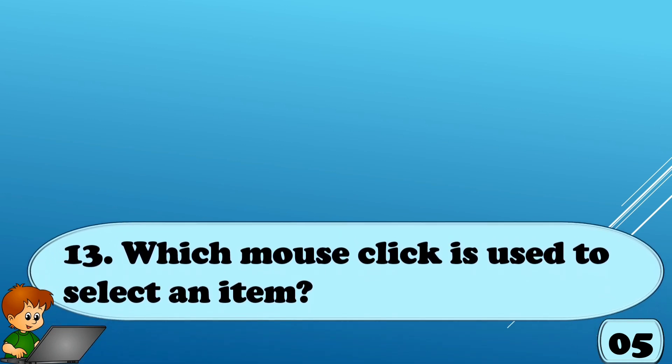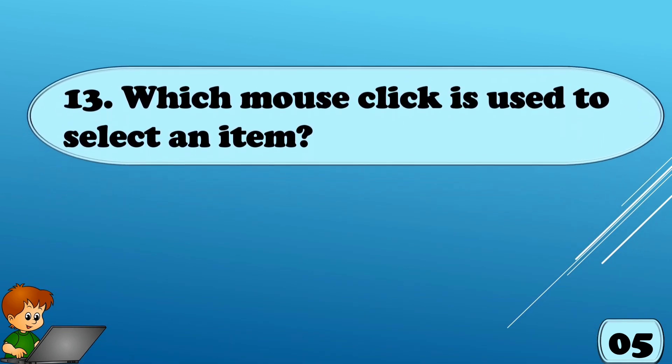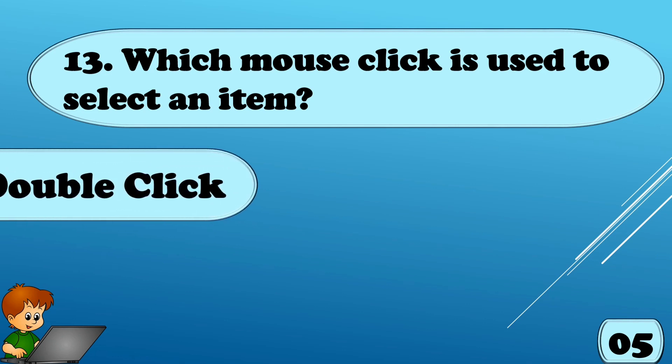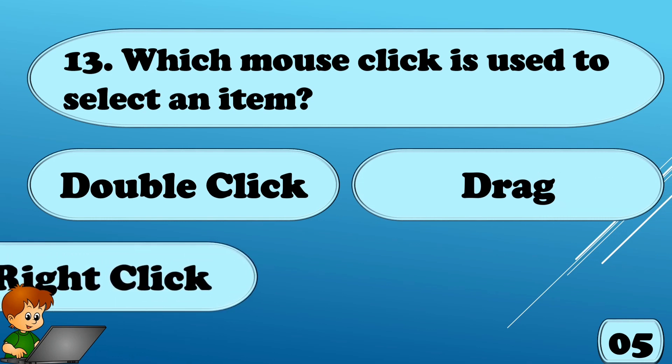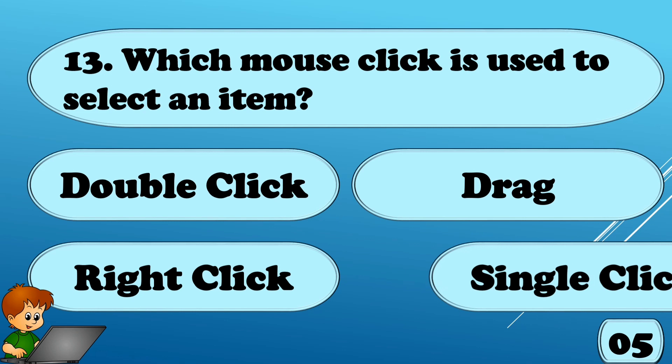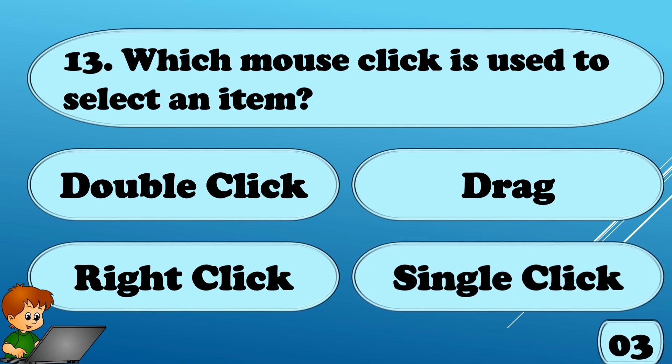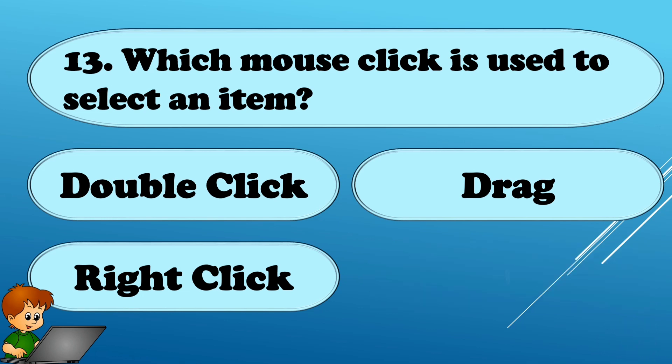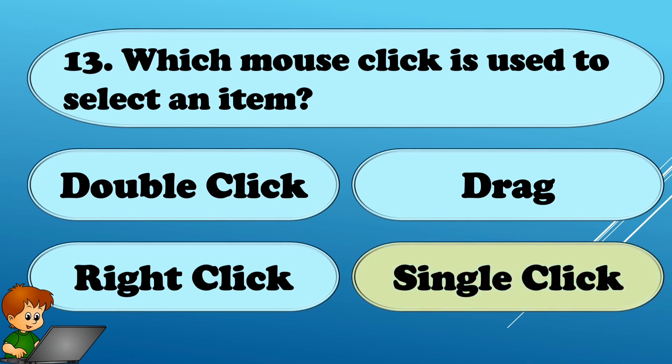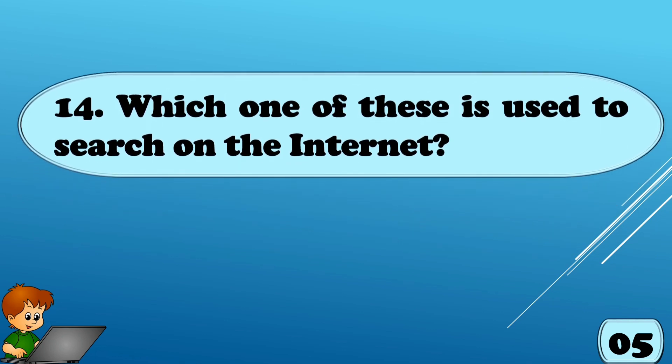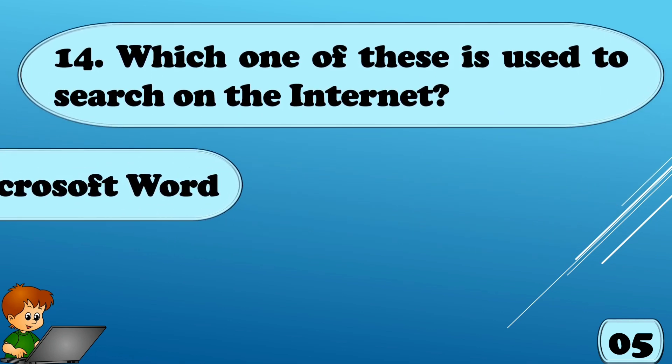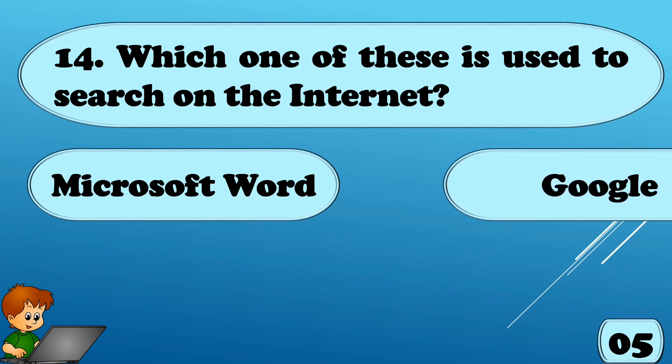Which mouse click is used to select an item? Options are A. Double Click, Option B. Drag, Option C. Right Click, or Option D. Single Click. The right answer is Single Click.